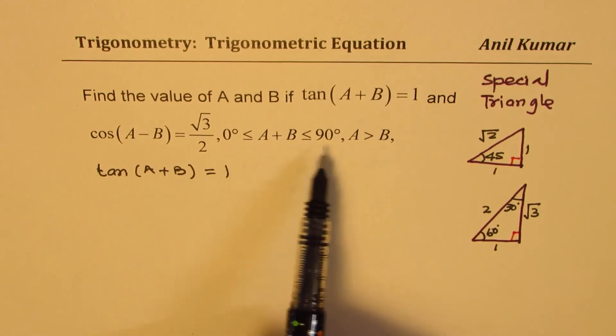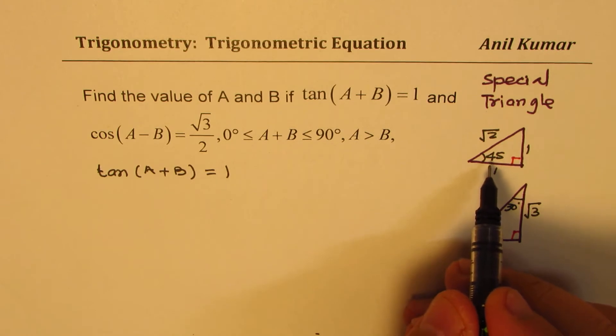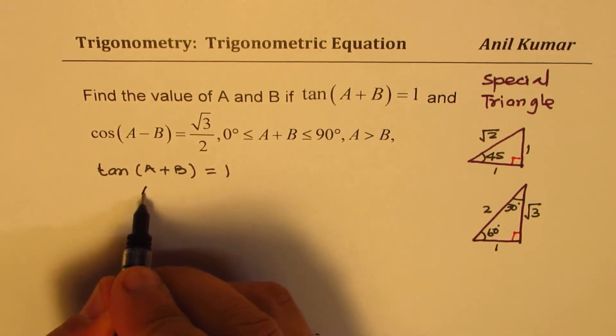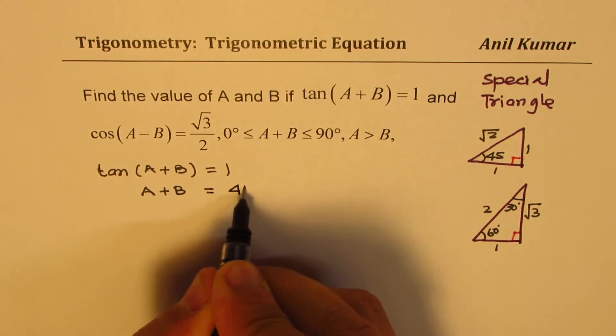That means we are only concerned with quadrant 1. Now here, clearly, tan θ = 1 means A+B is equal to 45 degrees.